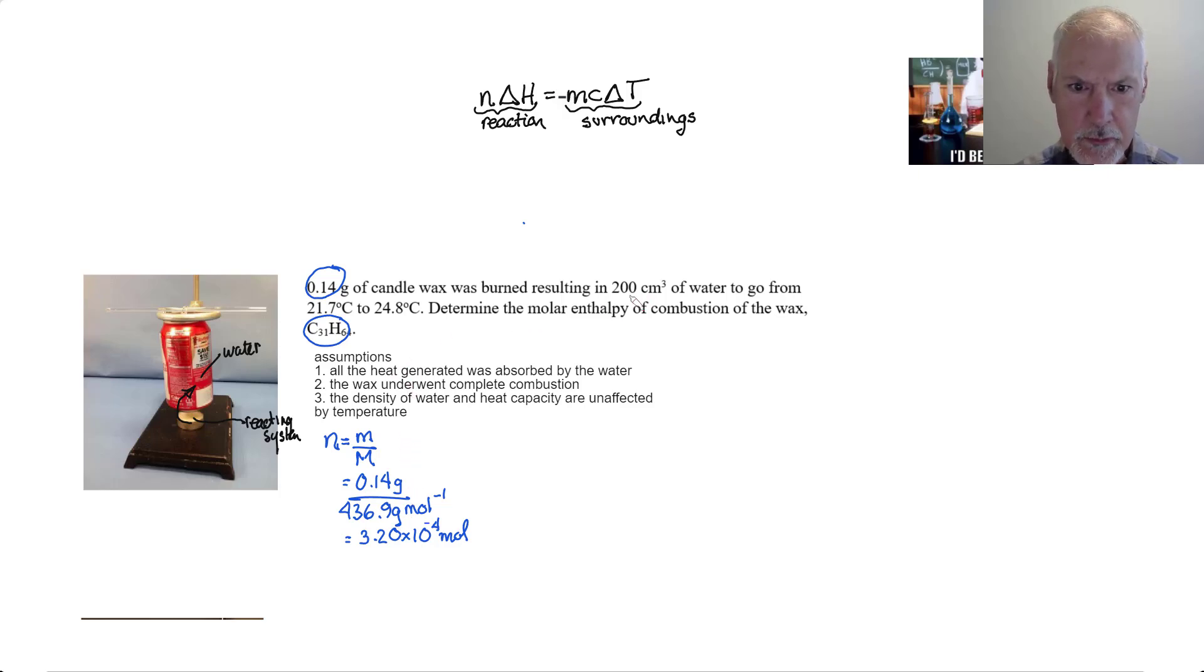Let's see what other things we're told here. 200 cubic centimeters of water. That constitutes our surroundings. And if we assume that the density of water is unaffected, the density of water is 1, we can get away with saying that's the same as 200 grams of water. So, that can be the mass of my surroundings.